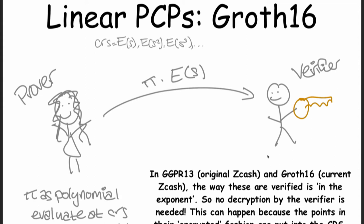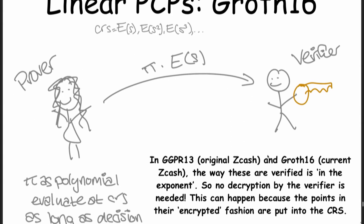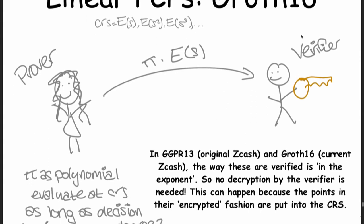This has a CRS — rather than the verifier having a key which he needs to keep to himself, this has a common reference string, which is where the trusted setup comes from. In constructing this common reference string, you have to all work together to produce the information. Before, the verifier had to have some private information; now, there needs to be private information at some point to construct the things which are allowed to be public. But from then on in the world, you can just use these public elements, and seeing them doesn't help anybody to break proofs.